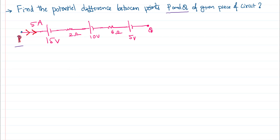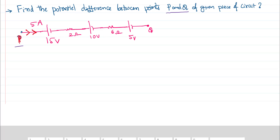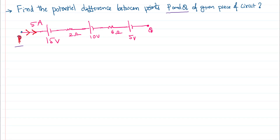Assuming point P is at a higher potential, as the current is passing from point P, you can say potential at point P minus... Now the first thing you encounter is this battery. Do you treat this battery's potential as positive or negative? You are going in this direction, first facing the positive plate of the battery and then the negative plate. Whenever you are going in a closed circuit and you first encounter a positive plate, treat that EMF as negative — that's the standard sign convention.